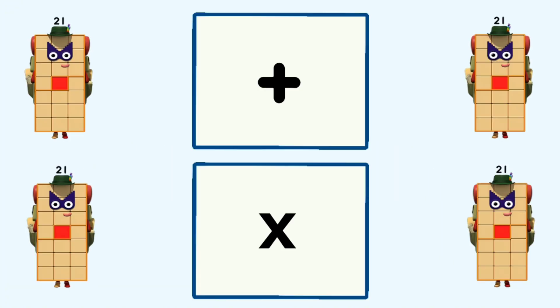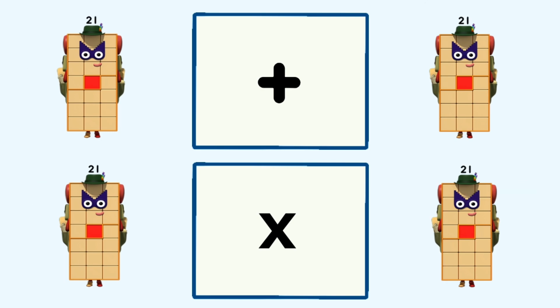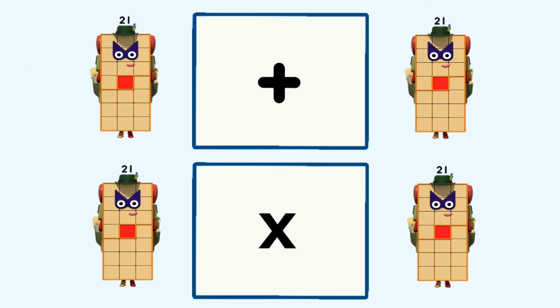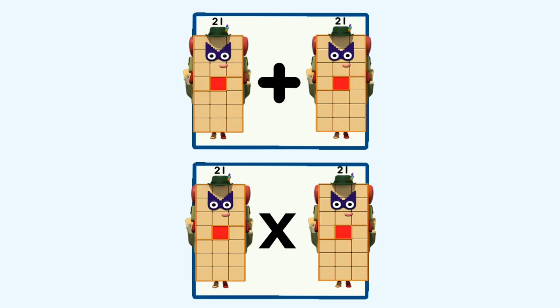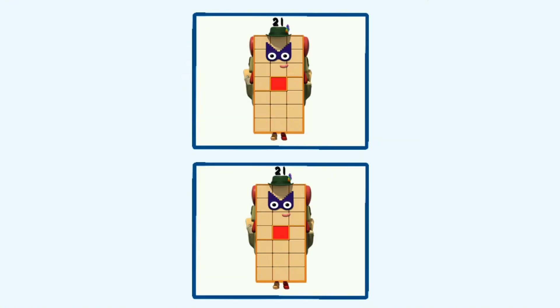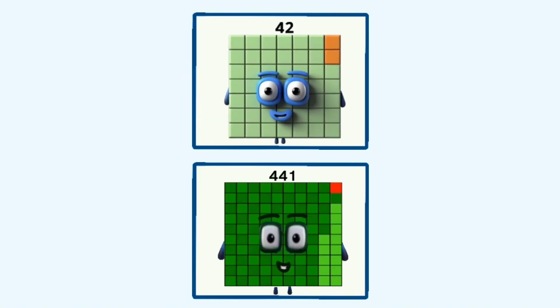21 plus 21 and 21 times 21 equals 42 and 441.